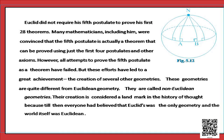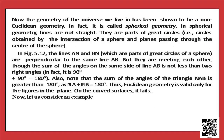Euclid did not require his fifth postulate to prove his first 28 theorems. Many mathematicians, including him, were convinced that the fifth postulate is actually a theorem that can be proved using just the first four postulates and other axioms. However, all attempts to prove the fifth postulate as a theorem have failed, but these efforts led to the creation of several other geometries called non-Euclidean geometries, which are quite different from Euclidean geometry.